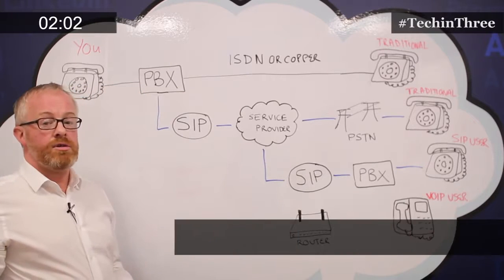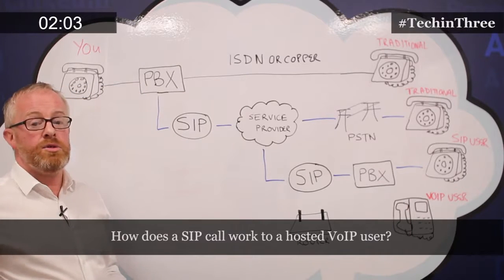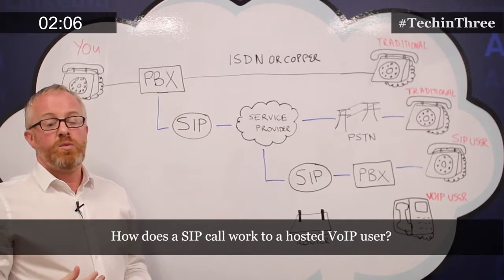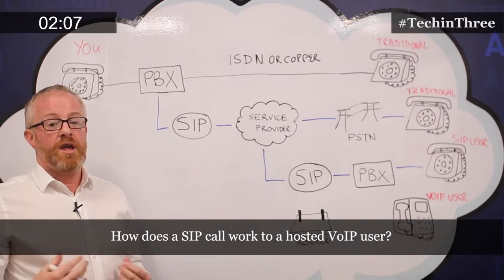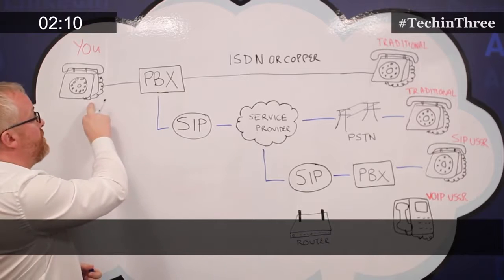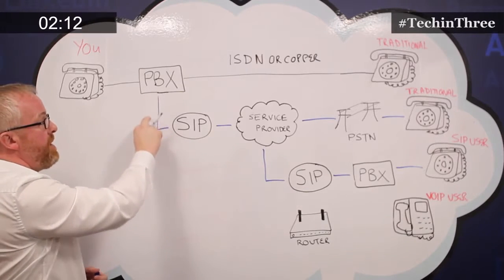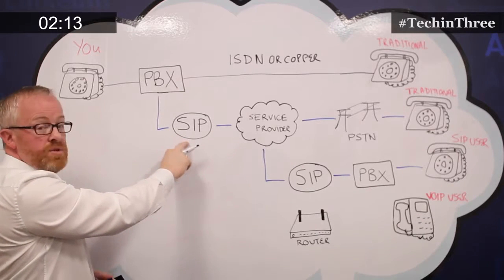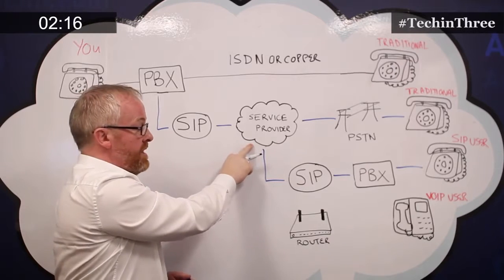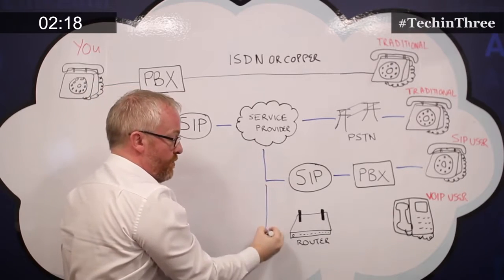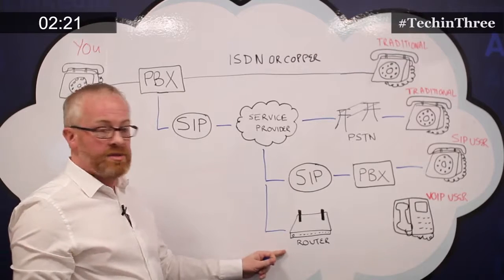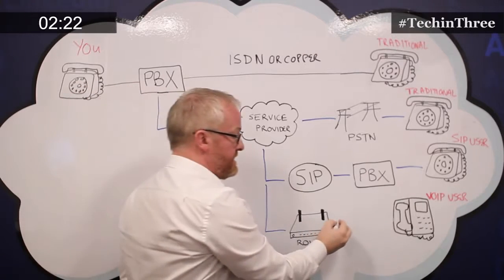Now imagine you're calling somebody who's not using SIP but is using VoIP — a fully hosted solution. You make that call, it goes through the PBX, through your SIP, then on to your service provider. This time, it goes to the router on their site, and from that router the call gets delivered.